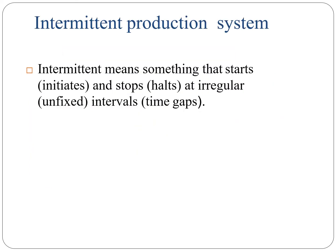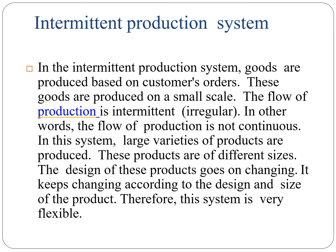Now let's start with the intermittent production system. Intermittent means something which starts and stops at irregular intervals. The key word here is 'irregular' — they are not producing on a regular interval, which is different from the continuous production system. In the intermittent production system, goods are produced on customer orders and they are produced on a small scale.